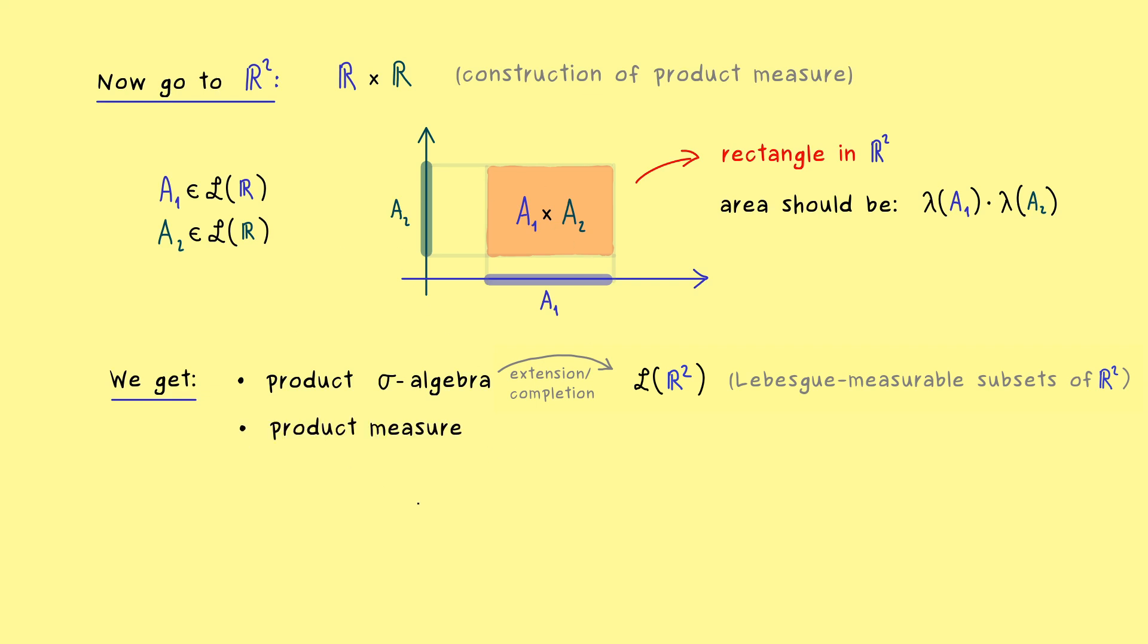And by construction, the two-dimensional Lebesgue measure comes out as the so-called product measure. So indeed the product measure is a very general procedure. We now apply for the Lebesgue measure here. And what we get, we can simply call lambda 2, because it's the two-dimensional Lebesgue measure.